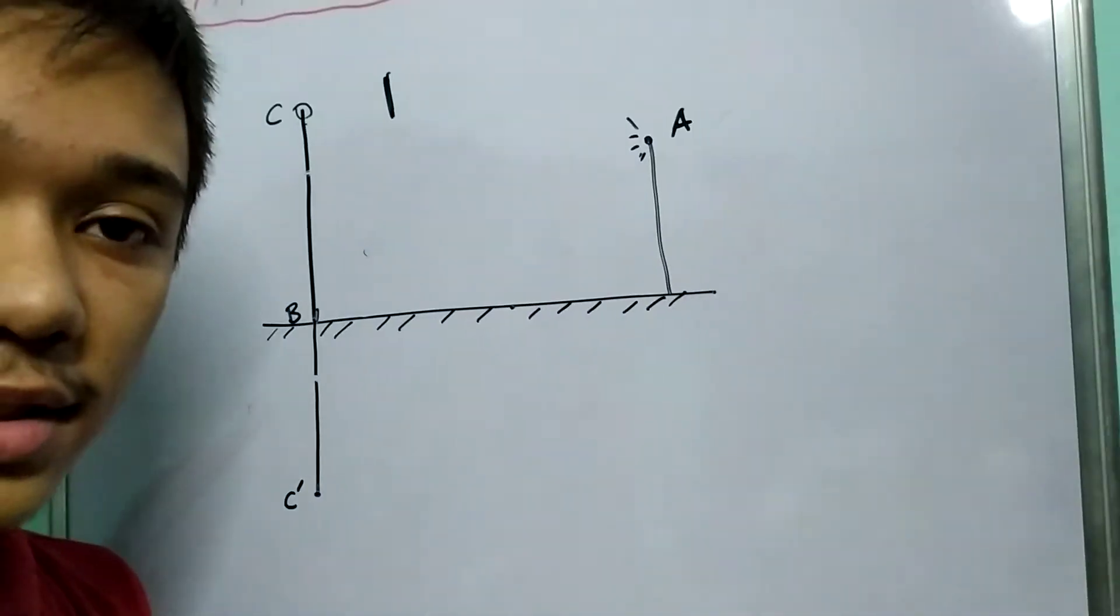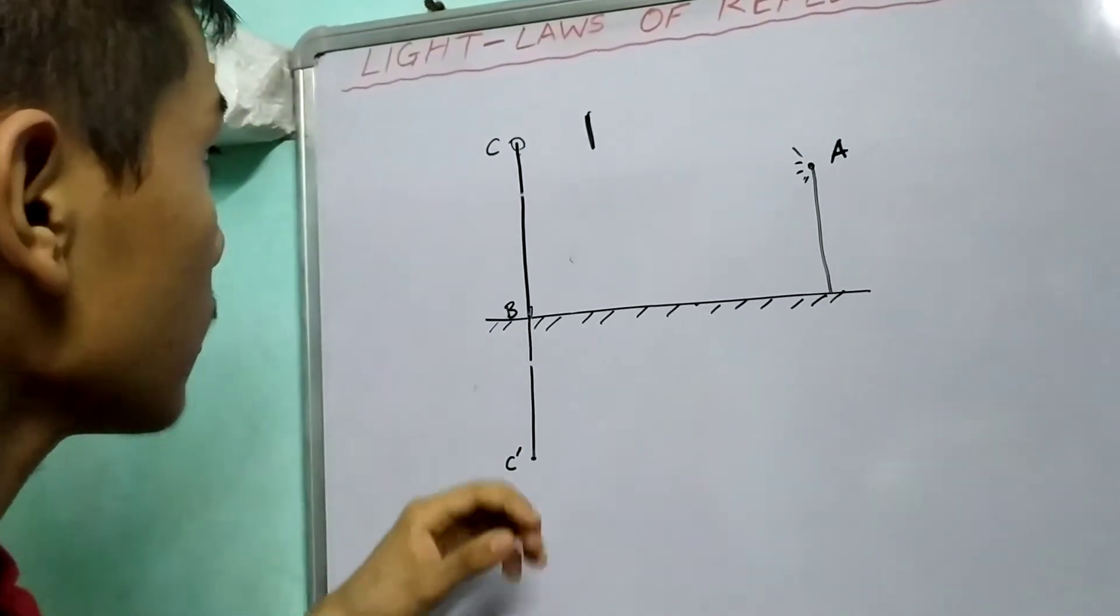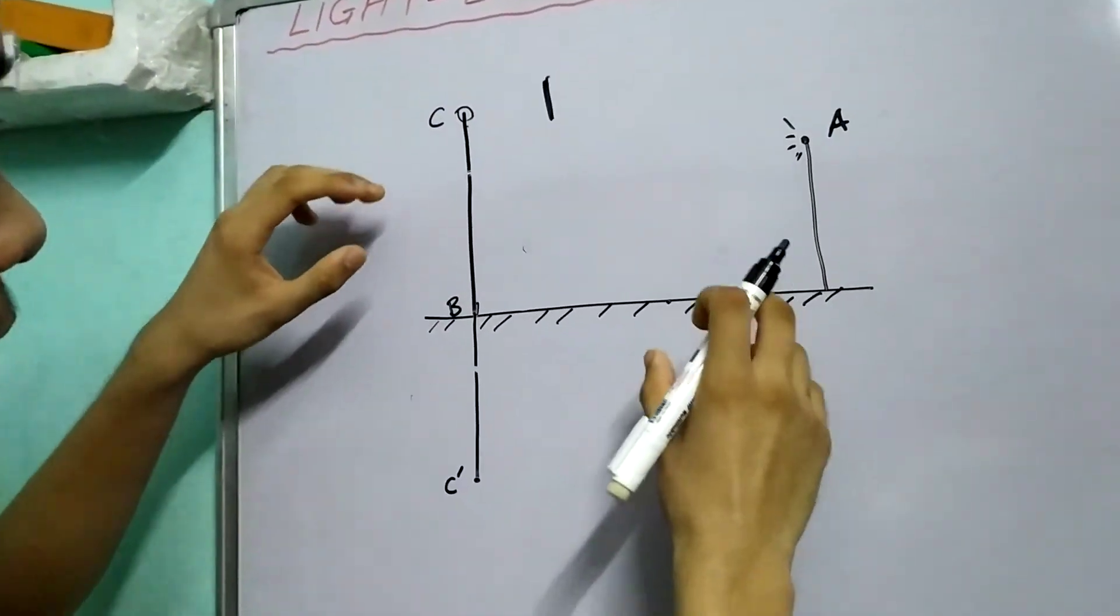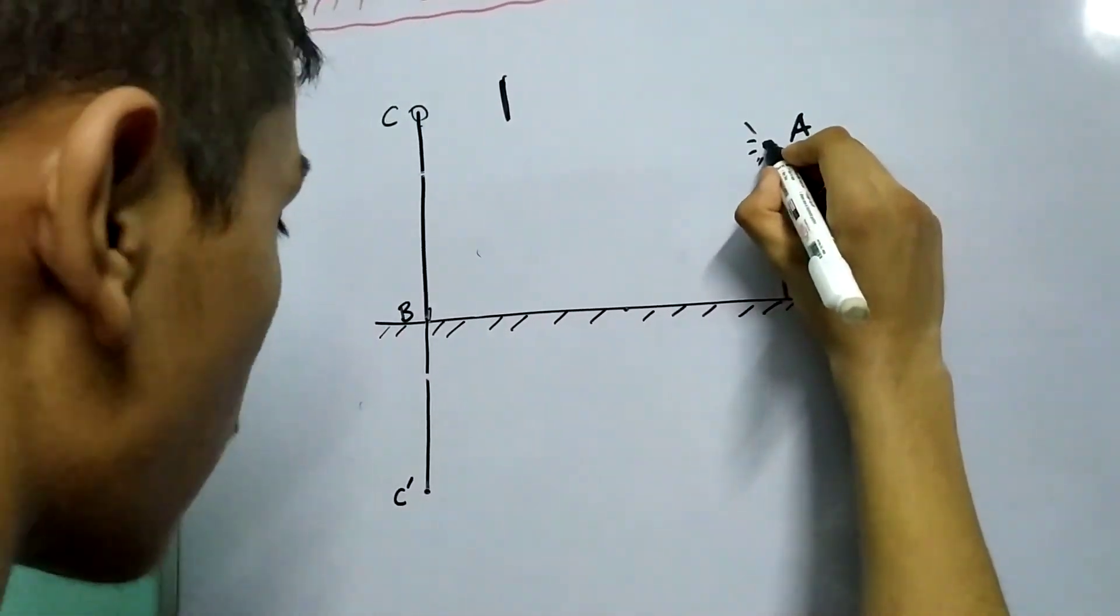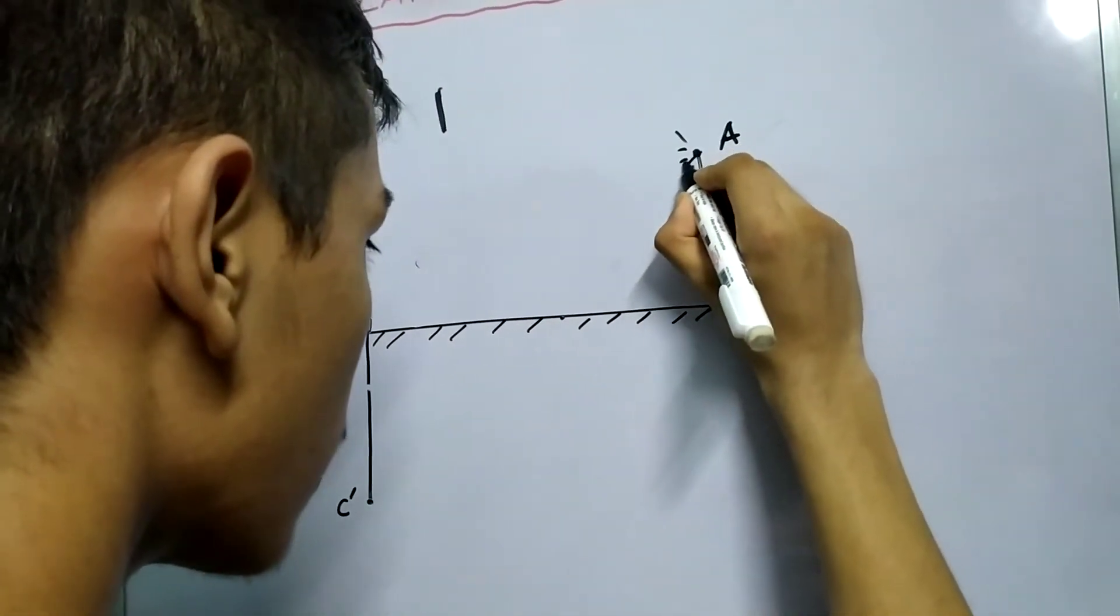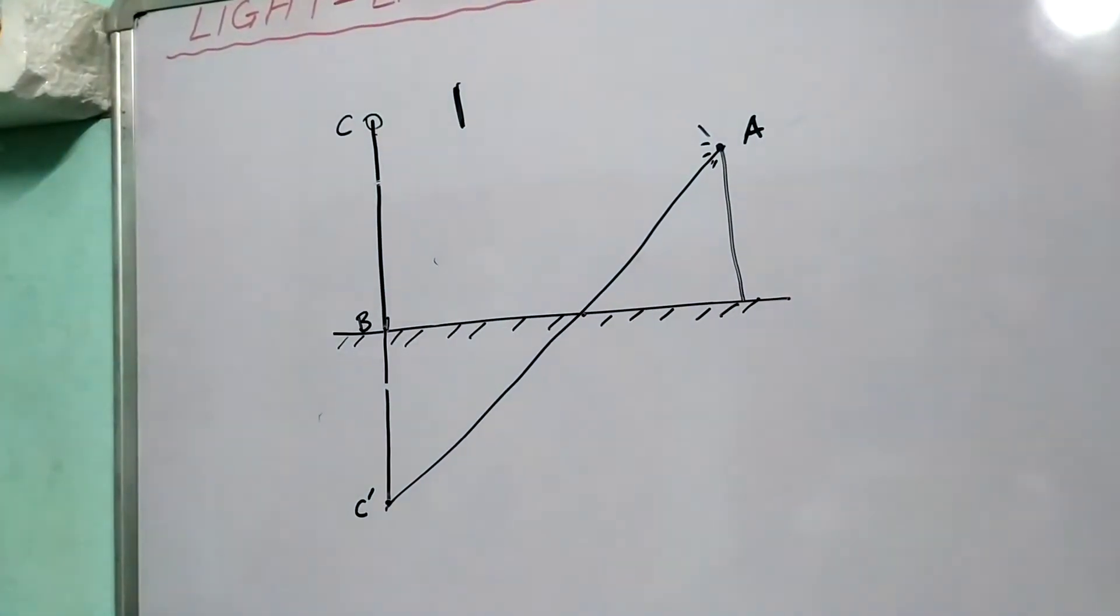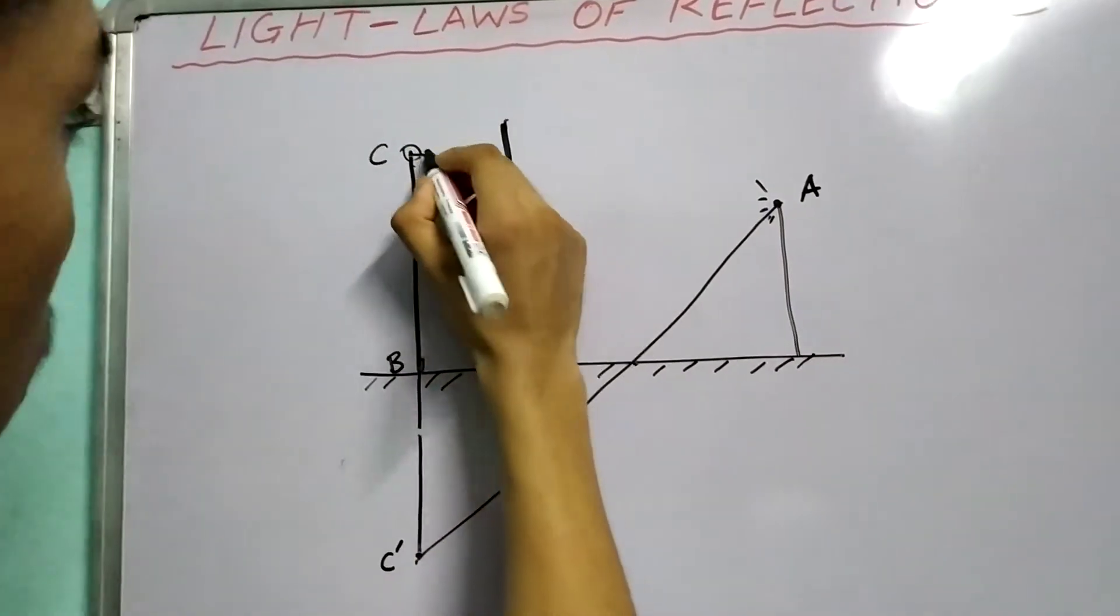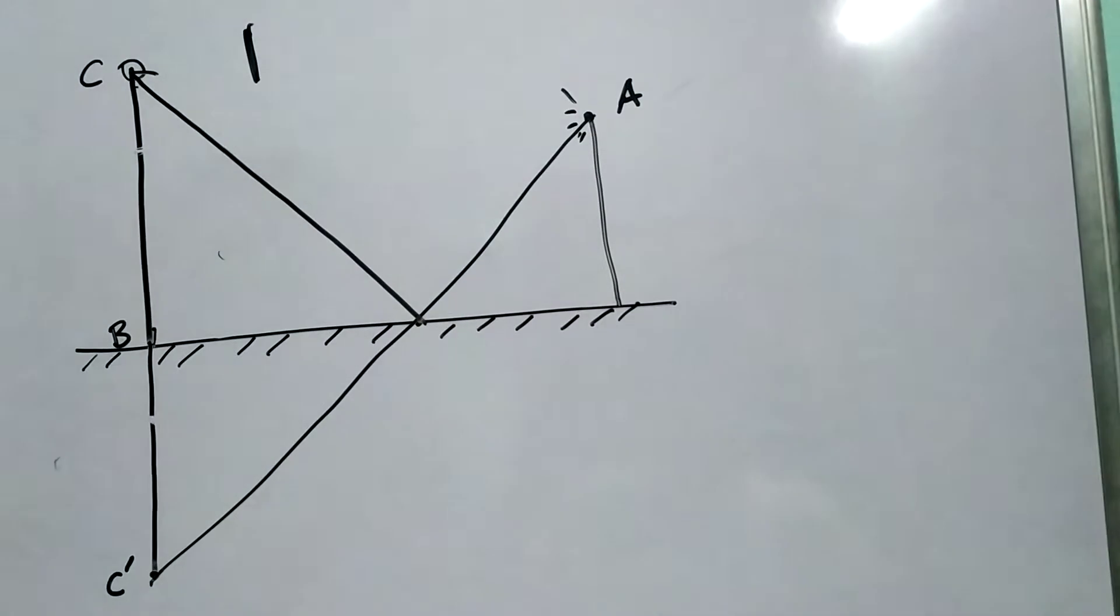The medium doesn't change, therefore light won't suffer any bending. And the path lengths, this path and this path will be equal. Let me just draw it. There you go.